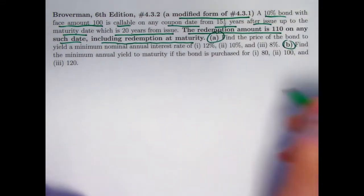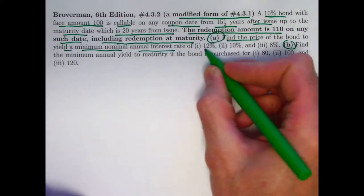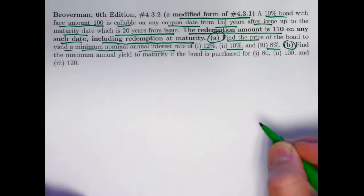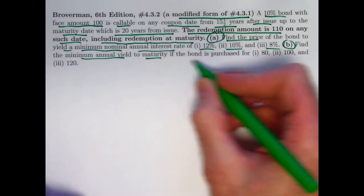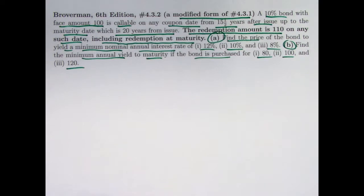Once again, two things to do, A and B. Find the price of the bond to yield the minimum nominal annual interest rate of 12%, 10%, and 8%, and find the minimum annual yield to maturity if the bond is purchased for different amounts 80, 100, and 120. Just like in the last video, before you use any equations, it's very important with callable bonds that you think carefully. You think in terms of worst-case scenarios really is the main lesson.